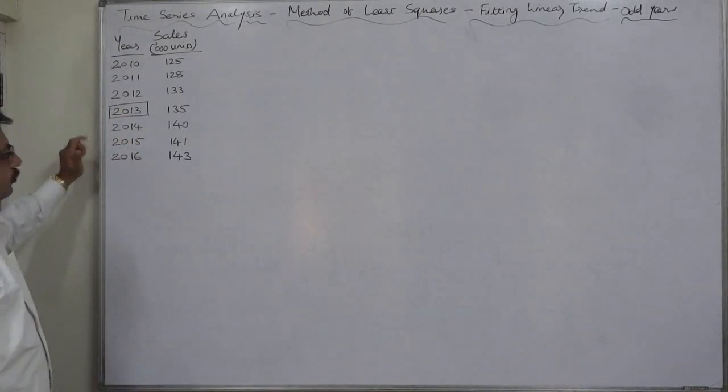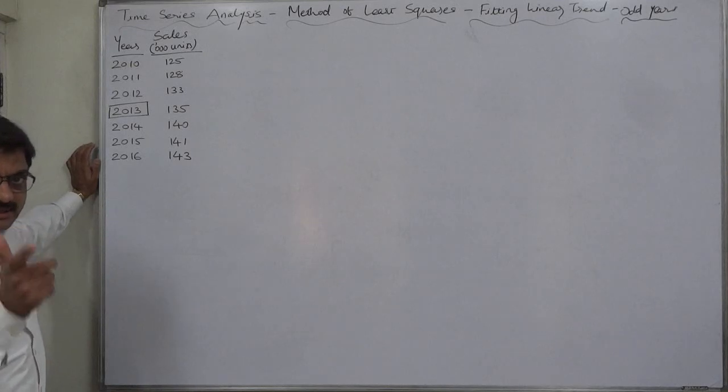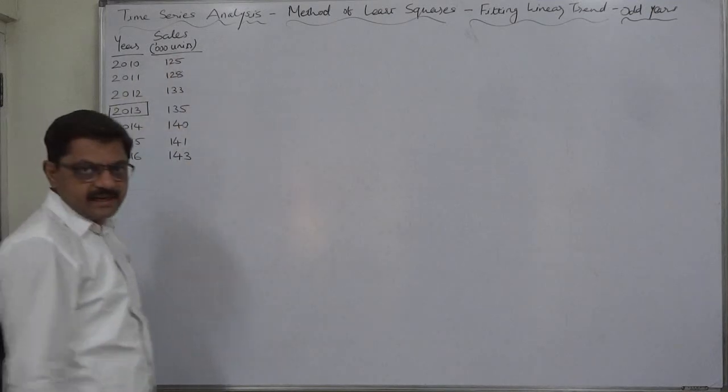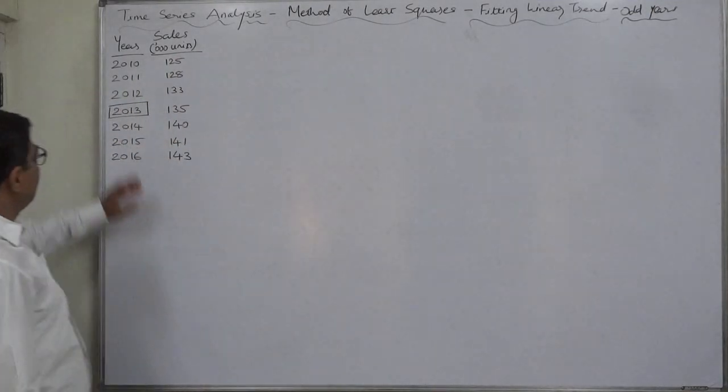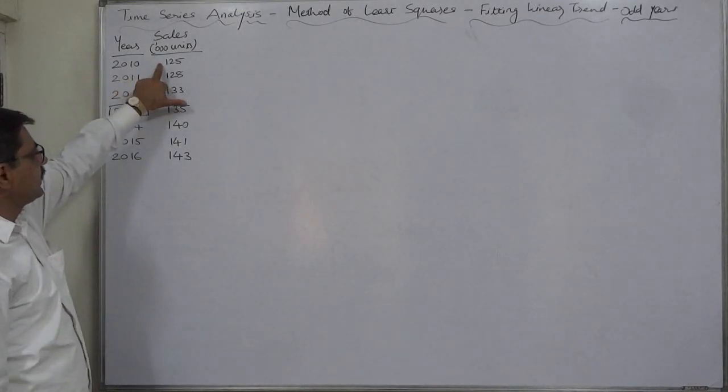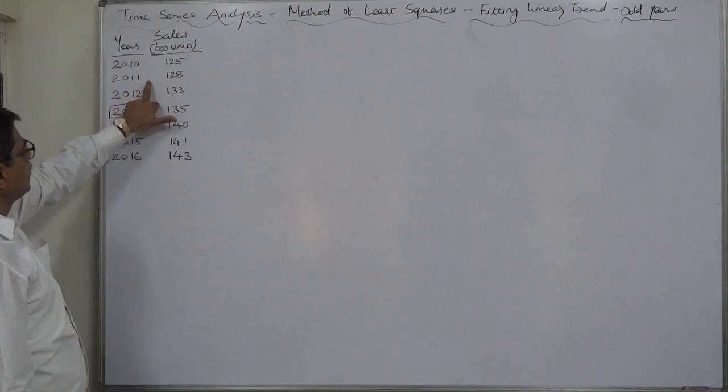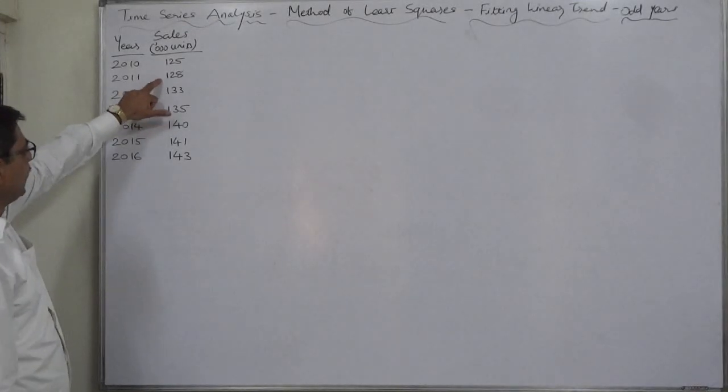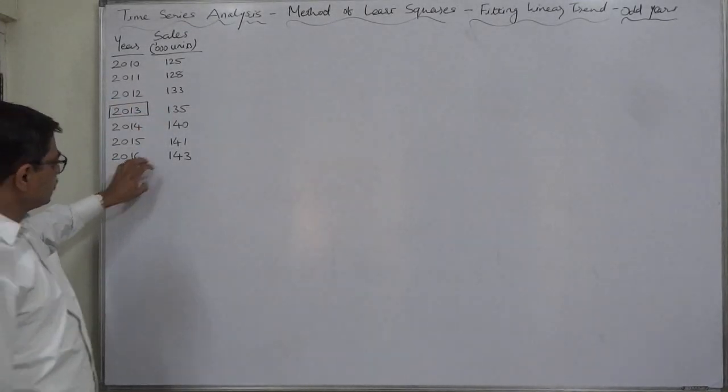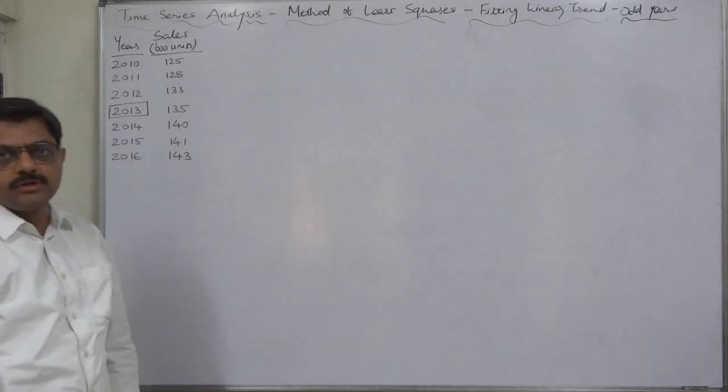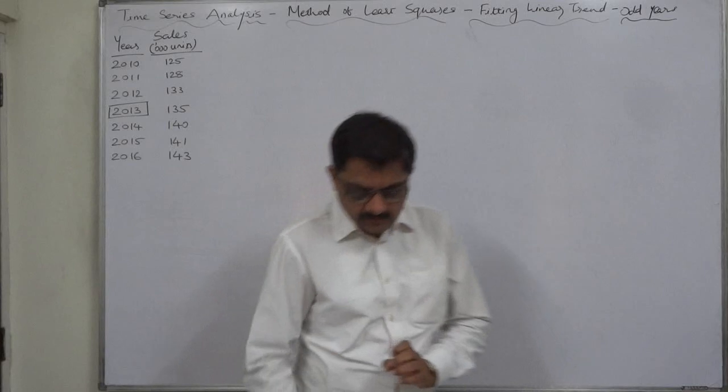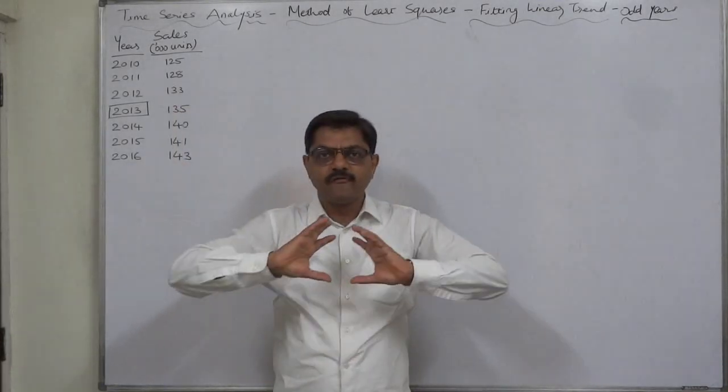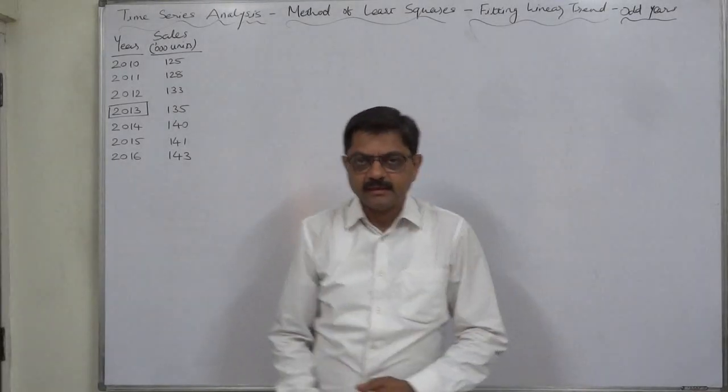Let's start with odd number of years. In this case, 2010 to 2016, we have seven years—that means odd number seven—and this is the data regarding sales in thousand units. So we believe that in 2010 the sales was 125 thousand units. Because of change in time, 2011 the sales was 120 thousand units and so on, and in 2016 it was 143 thousand units.